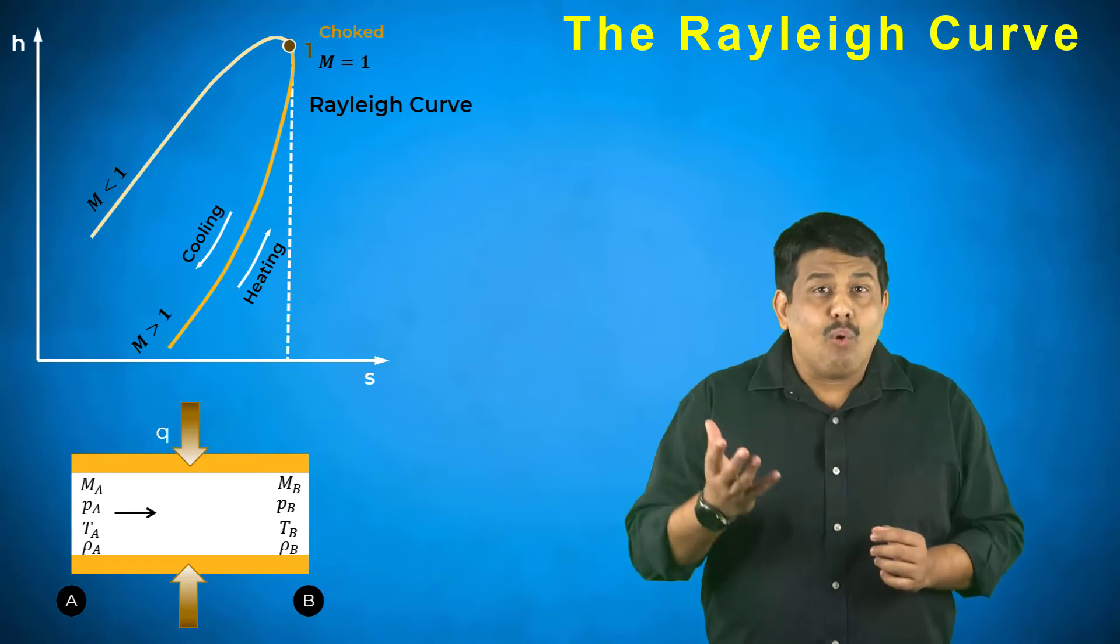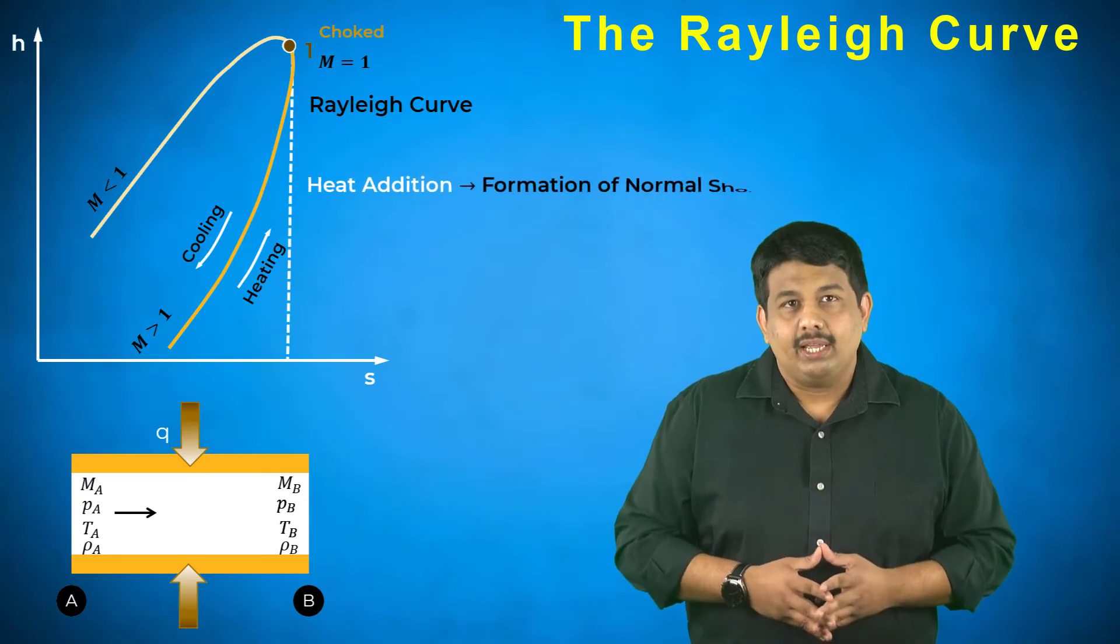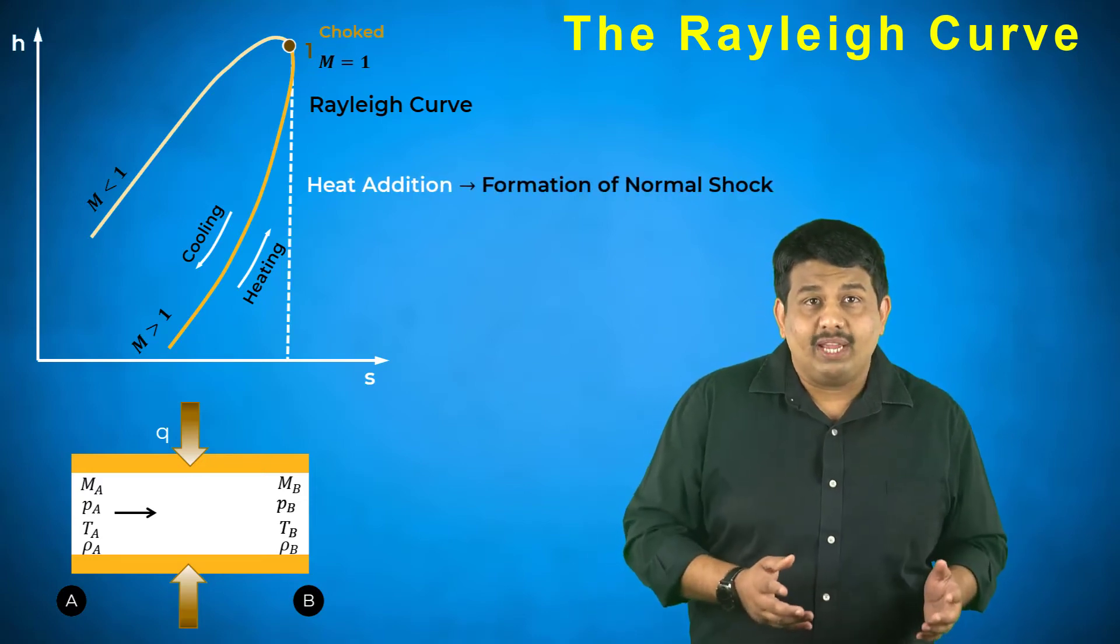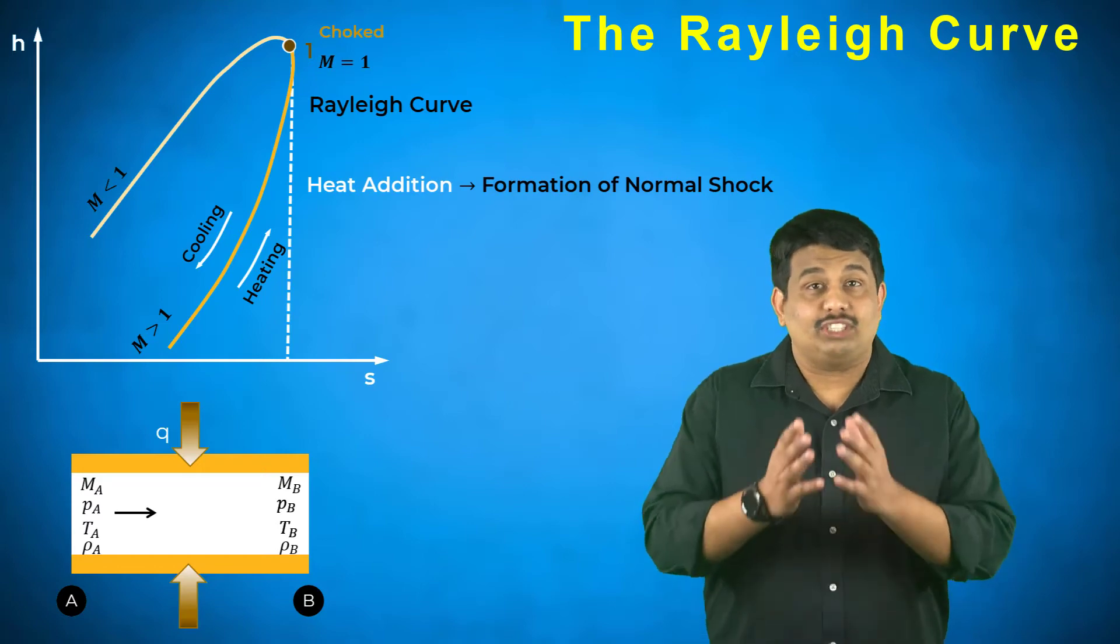If we continue adding more heat beyond this point, a normal shock is formed and the flow in region A suddenly becomes subsonic.